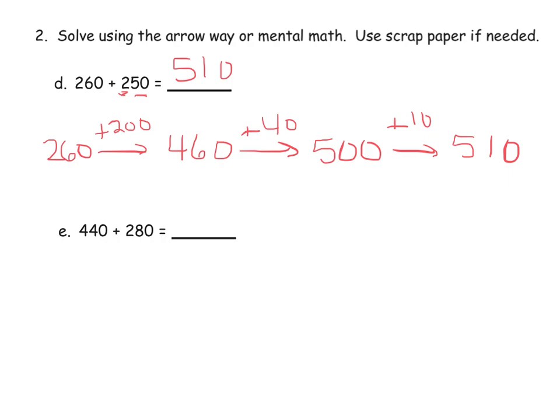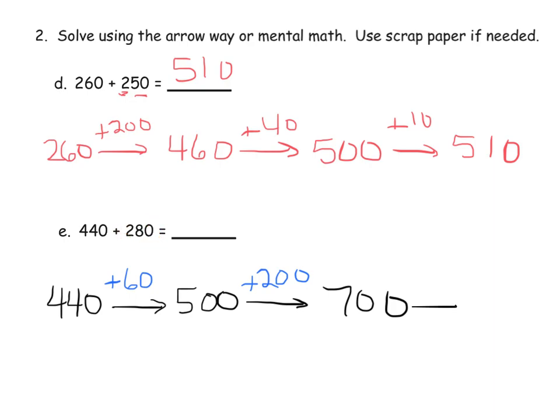Let's do this next one, which is 440 plus 280. Let's bump ourselves up to the next milestone number. So let's start by adding 60. And that gets us to 500. Now I can add 200. That gets me 700. So far, I've added 200 and I've added 60. How much more do I need to add? I need to add 20 more. So I can do another arrow with 20 more. And that gives us the answer of 720.